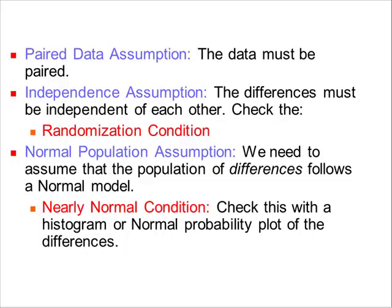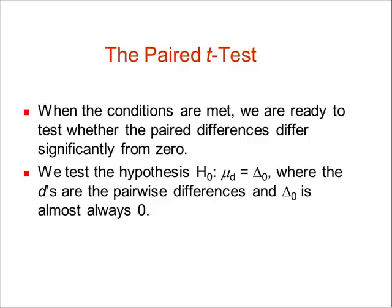So we have a paired data assumption. The data must be paired. We want to make sure that the differences are independent of each other. We want to check for randomization. And we need to assume the population of difference follows a normal model. And we want to check the nearly normal condition with a histogram or a normal probability plot of the differences.